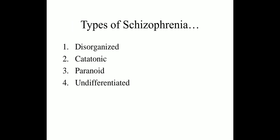Schizophrenia is divided into the following types: disorganized, catatonic, paranoid, and undifferentiated. It is classified on the basis of signs and symptoms that the patient shows in schizophrenia.